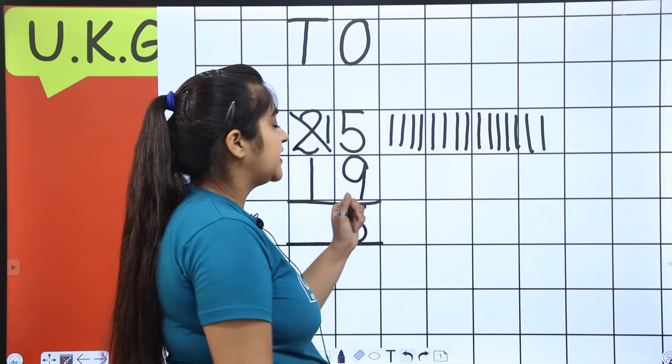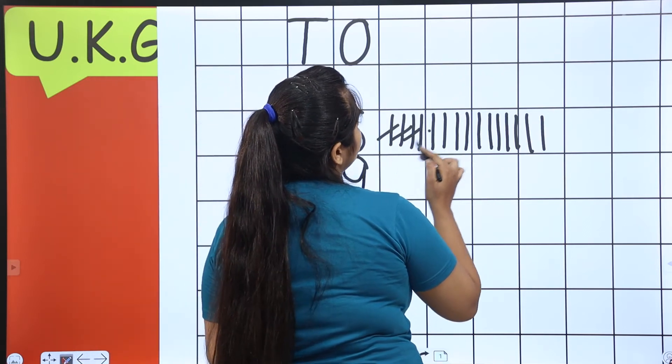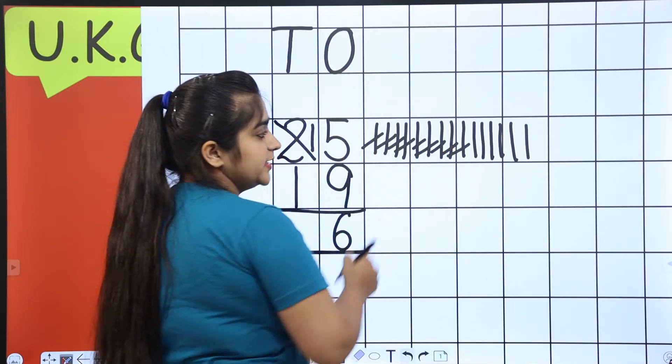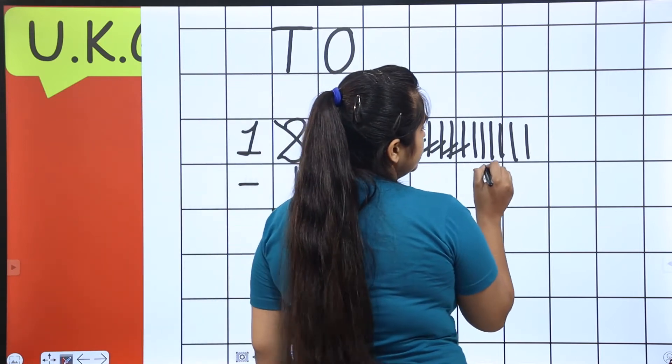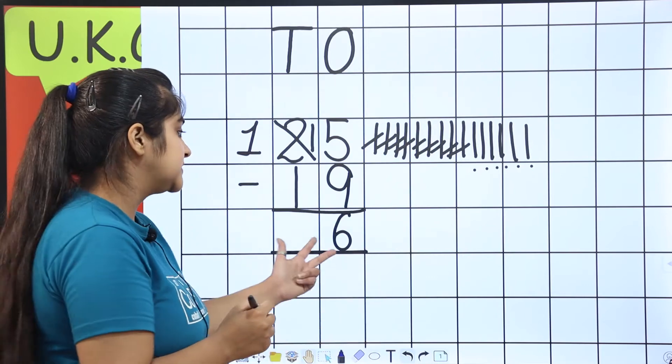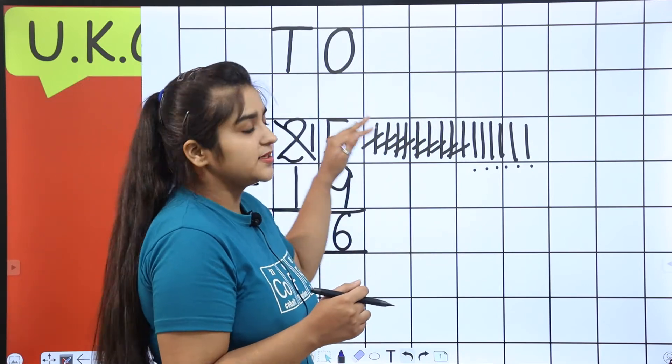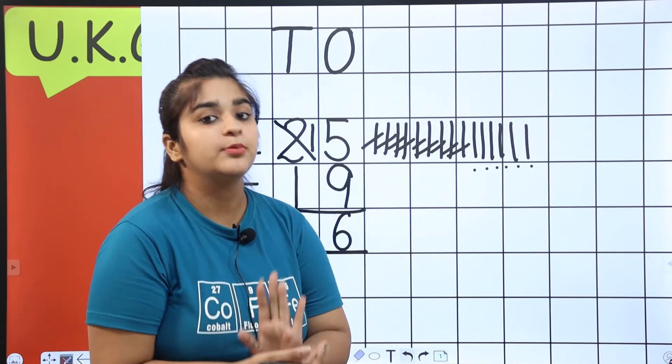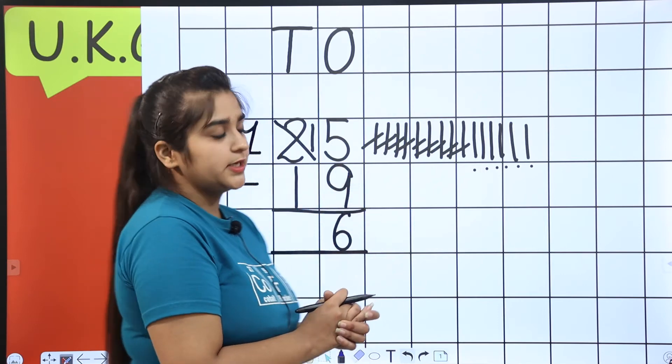Now, we have 15 lines. Now, we cut 9 lines. 1, 2, 3, 4, 5, 6, 7, 8, and 9. Now, we count the rest of the lines. 1, 2, 3, 4, 5, 6. How many lines are? 6. So, we have 6. And if we count it here, what will be the answer? 6. Whatever you like, whichever method you like, you understand the method. Now, we have to use the method. Okay?